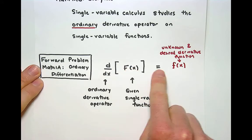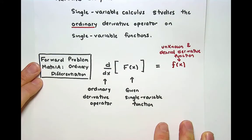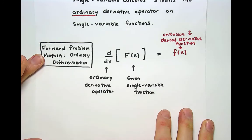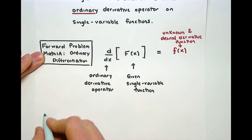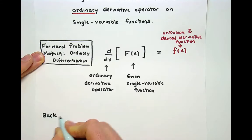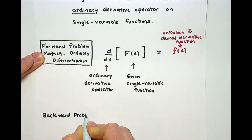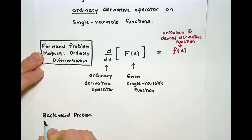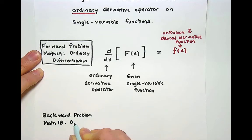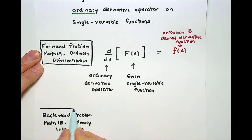Notice this was a single variable input and that's a single variable output derivative. In the second calculus class you study the reverse of this which I will call the backward problem. At Foothill College we call this Math 1B. Instead of ordinary differentiation this is now called ordinary integration.